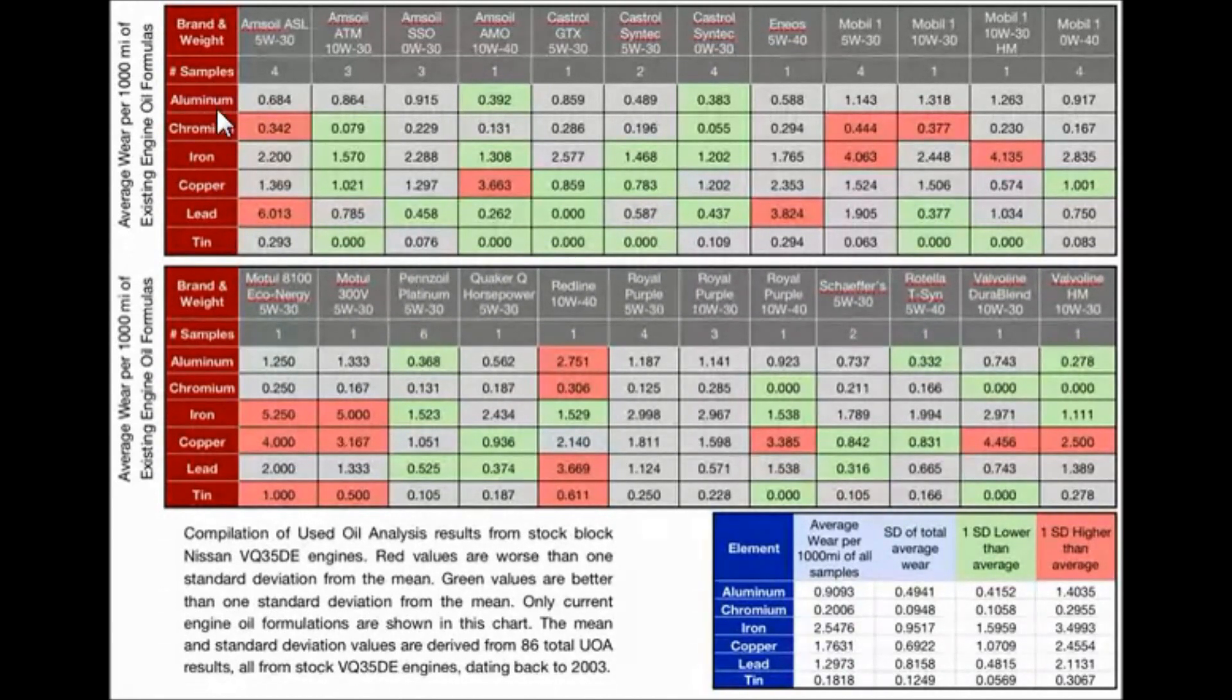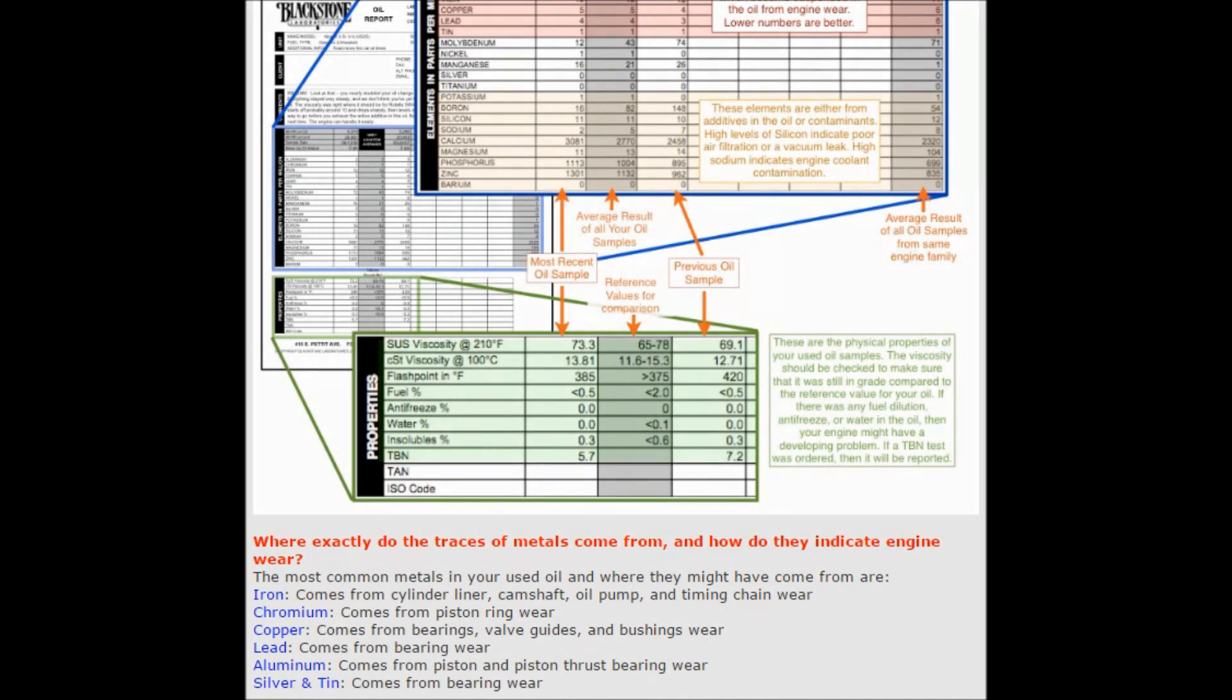This shows different particles of metal in your engine - aluminum, chromium, iron, copper, and lead. This is shown as parts per million of what was found in the oil. Anything in green is actually the standard deviation lower than average. Anything in red is higher than average. If it's gray, that's just the main average of what the results usually come back as. Let me show you where these particles are found in the motor so you can have a better understanding. Then we'll go over which oils I believe, after looking at this chart, are the best picks.